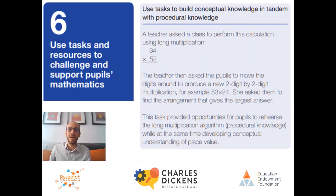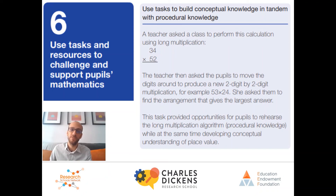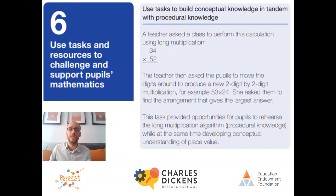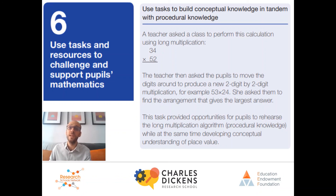Here's an example of how to use tasks to build conceptual knowledge in tandem with procedural knowledge. A teacher asked a class to perform a long multiplication: 34 times 52. The teacher then asked the pupils to move the digits around to produce a new two-digit by two-digit multiplication — for example, 53 times 24 — and find the arrangement that gives the largest answer. This task provided opportunities to rehearse the long multiplication algorithm (procedural knowledge) whilst at the same time developing conceptual understanding of place value.